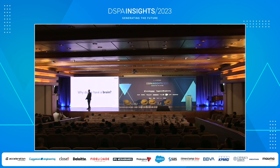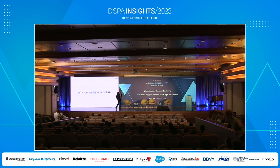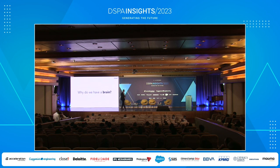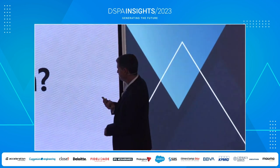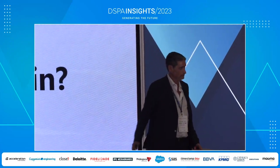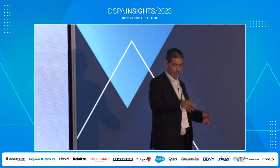My first question: why do we have a brain? When we speak about artificial intelligence, what is the reason for natural intelligence? Why — the monkey that left the tree and started — why was the purpose of this thing, which is heavy, high energy consumption, water consumption, and why not bigger legs or bigger eyes or bigger other things?